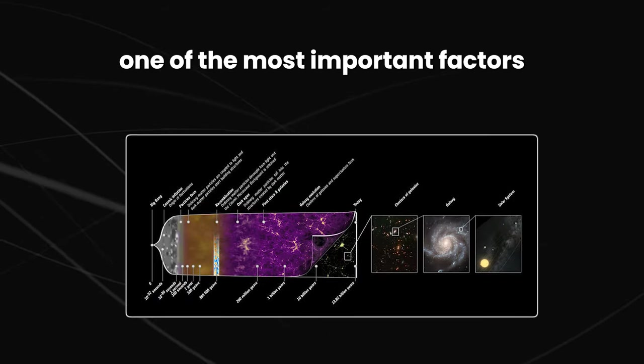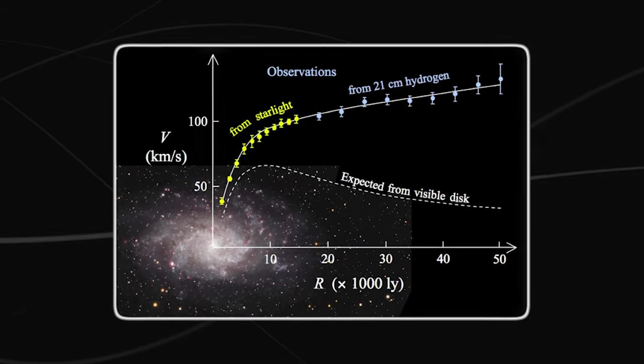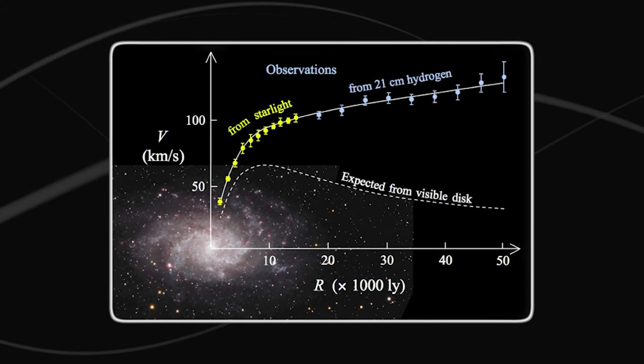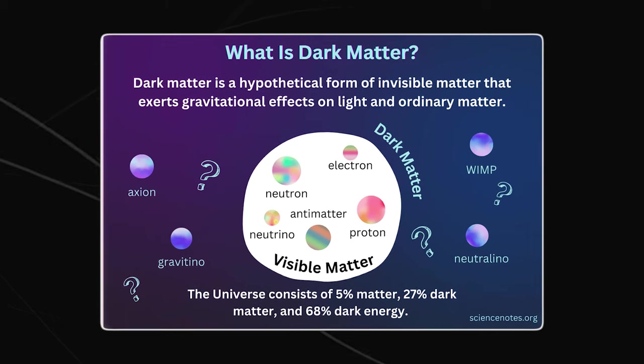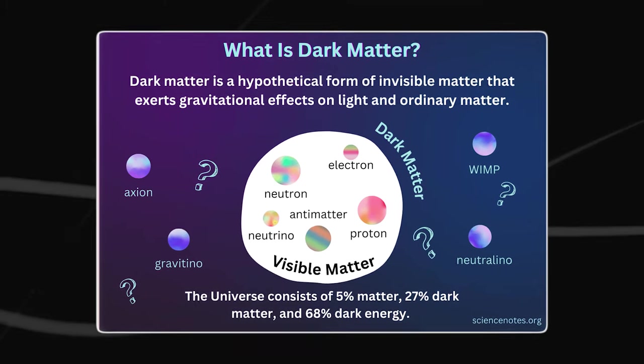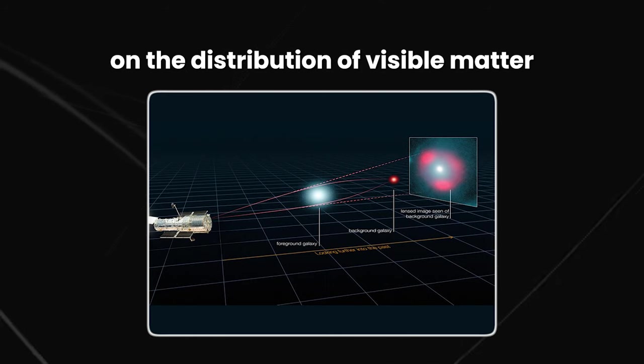One of the most important factors that influence the formation of galaxies is the distribution of dark matter and ordinary matter in the early universe. Dark matter is an invisible form of matter that cannot be seen directly, but its presence can be inferred from its gravitational effects on the distribution of visible matter.